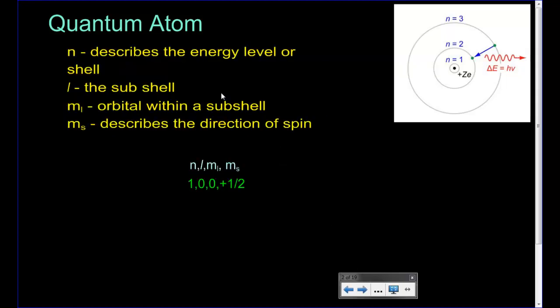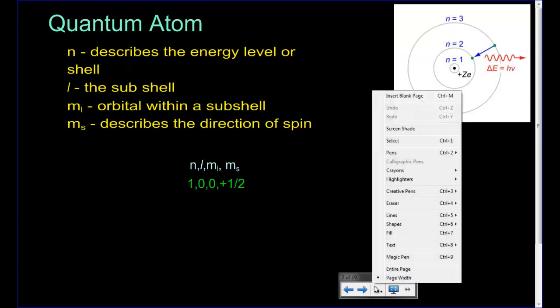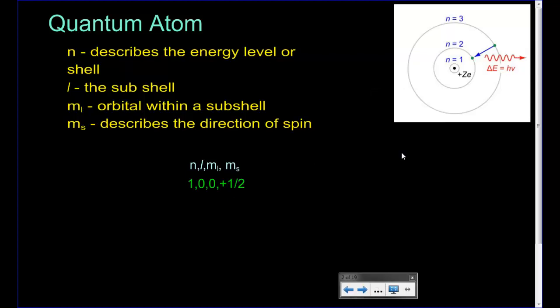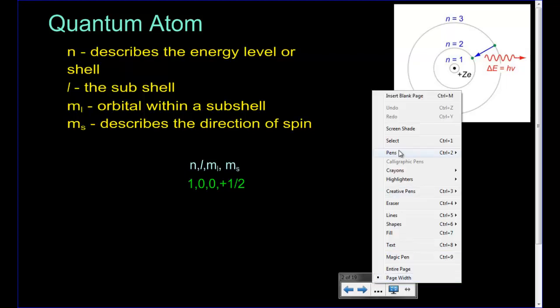N, the principal quantum number, describes the energy level or shell. If we look at the bottom number — one — it's in the first energy level, zero subshell. That's just an indication; it's not telling us the quantity, it's telling us a position. ML tells us its orbital is the zero orbital, and this electron is spinning with a plus one-half spin. Electrons can spin with positive or negative spins, and they're always one-half.